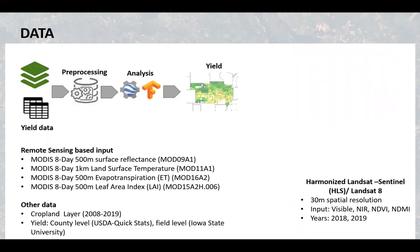Now let's have a look at the data used in this study. For county level analysis, MODIS-based surface reflectance, land surface temperature, evapotranspiration, and vegetation index time series were tested. For field level analysis, harmonized Landsat Sentinel-2 data and Landsat 8 time series were used at 30 meter spatial resolution.